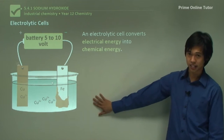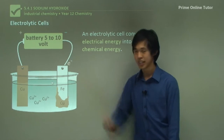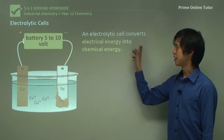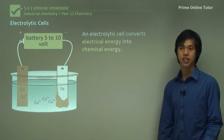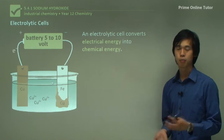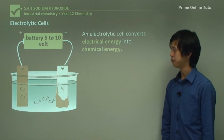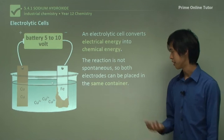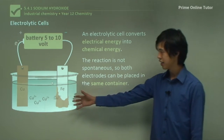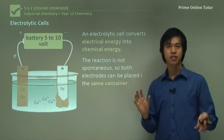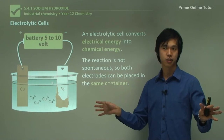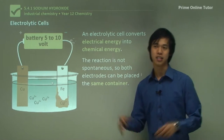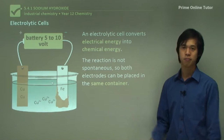Now, the electrolytic cell. We have a battery here instead of a voltmeter. This electrolytic cell converts electrical energy into chemical energy — it creates less stable chemicals by inputting electrical energy. The reactions are not spontaneous. Both electrodes can be placed in the same container; because it's not spontaneous and takes energy to do this, we can put them in the same container — no problem.